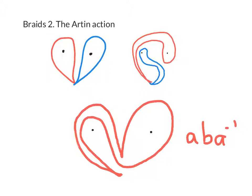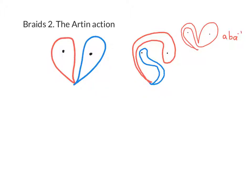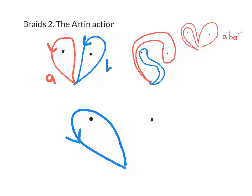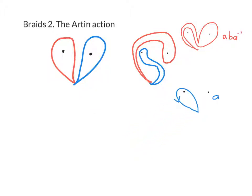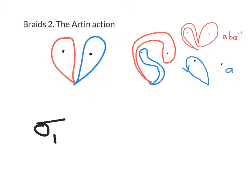Now let's deal with the blue loop. Looking at the picture, the blue loop is homotopic to the loop that just goes around the first point, which is simply a copy of a. So the blue loop goes to a. In summary, the Artin action of the braid sigma_1 as a two-strand braid sends the red loop a to aba⁻¹, and it sends the blue loop b to a.